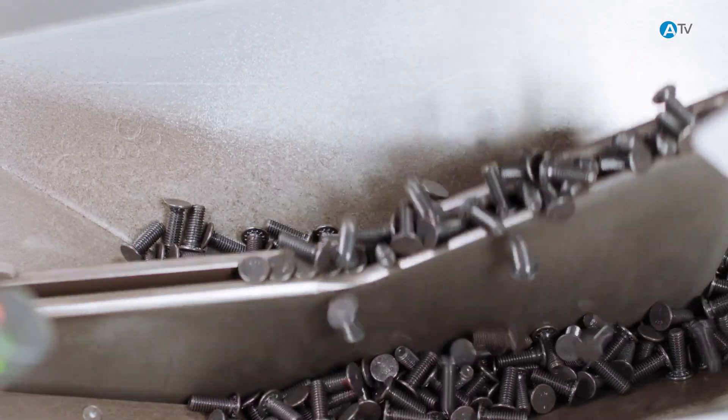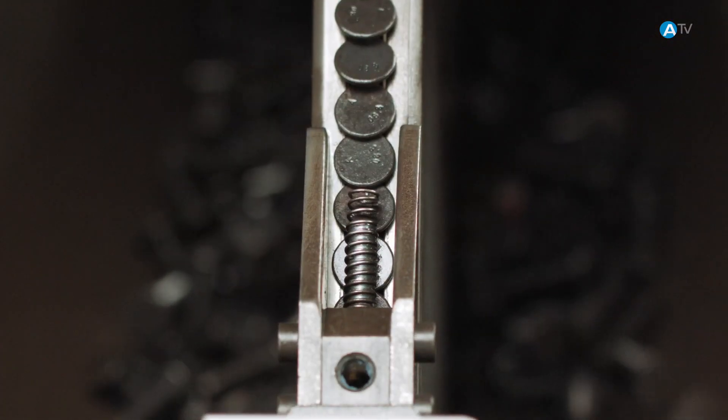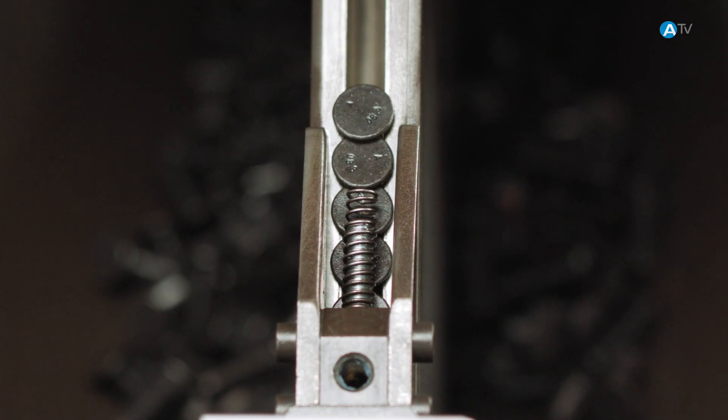To gain the correct position, the screws slide into a guide groove and hang from it by their heads. A wiper removes any fastener that is not in the correct position as the rail rises.